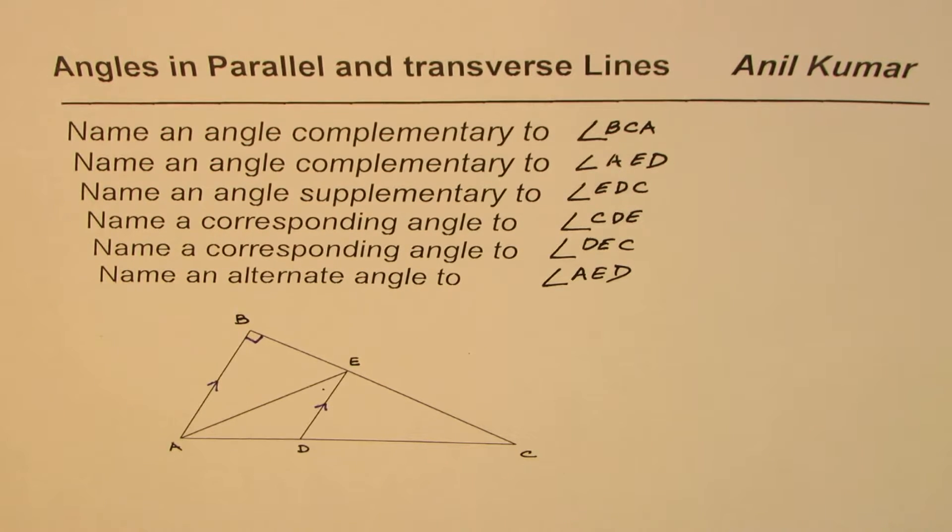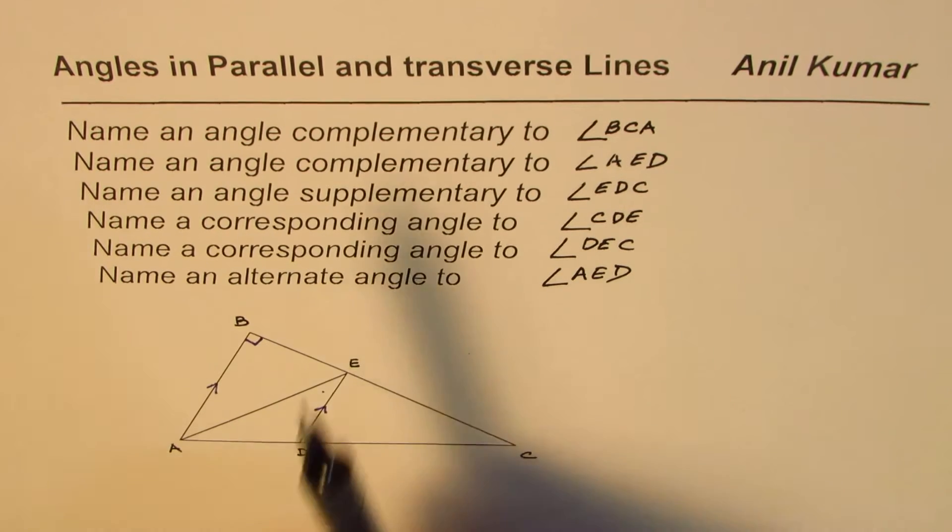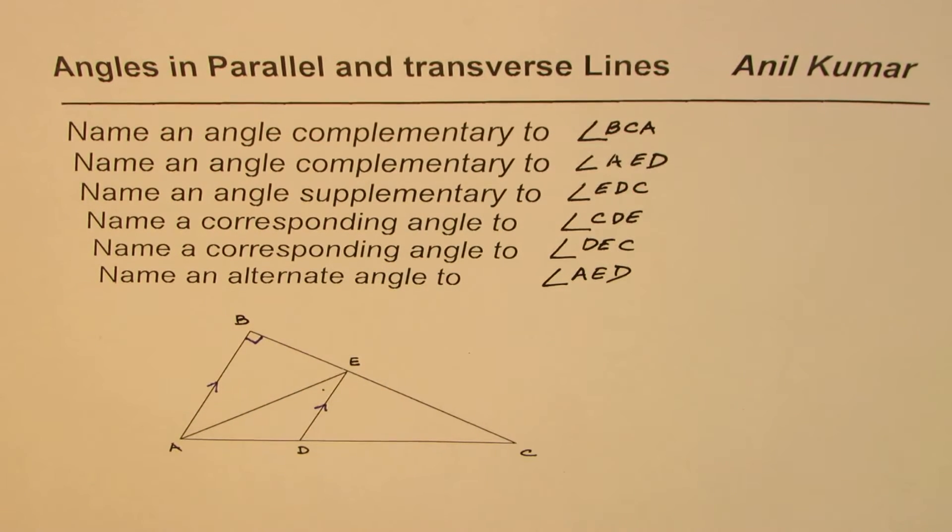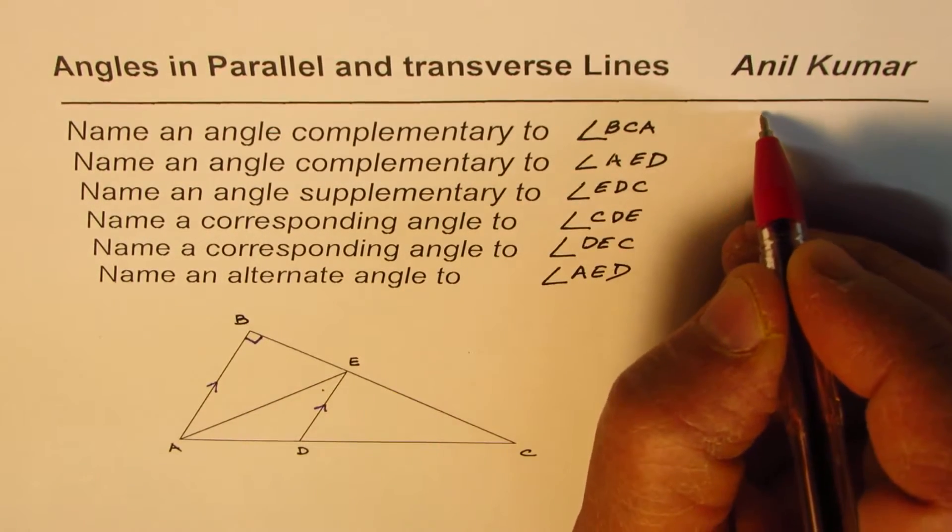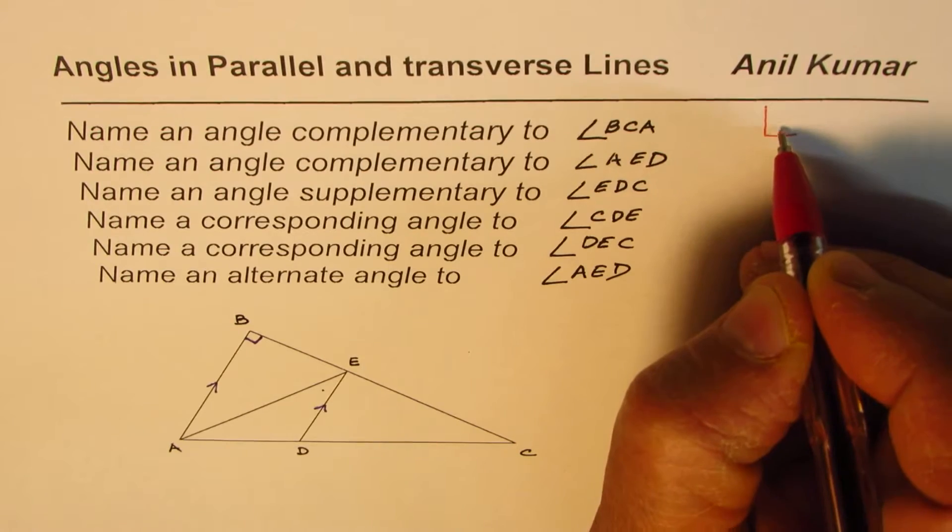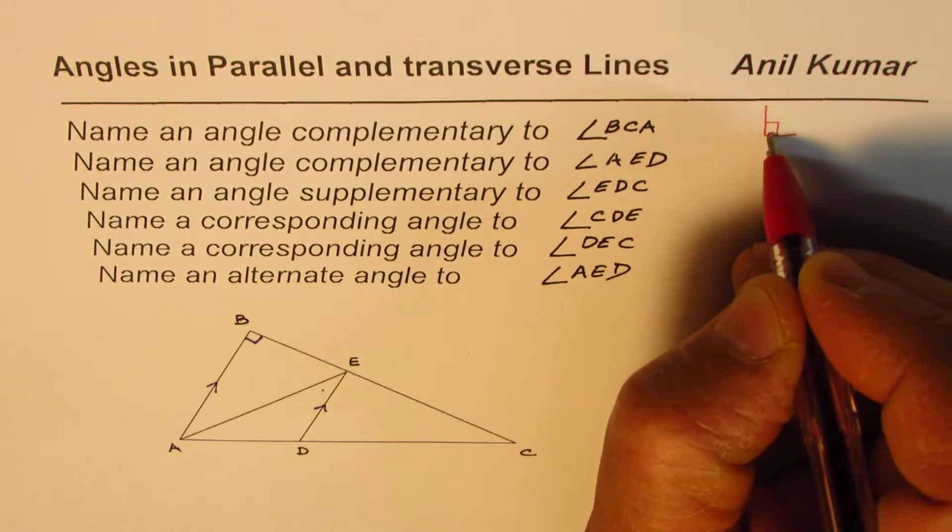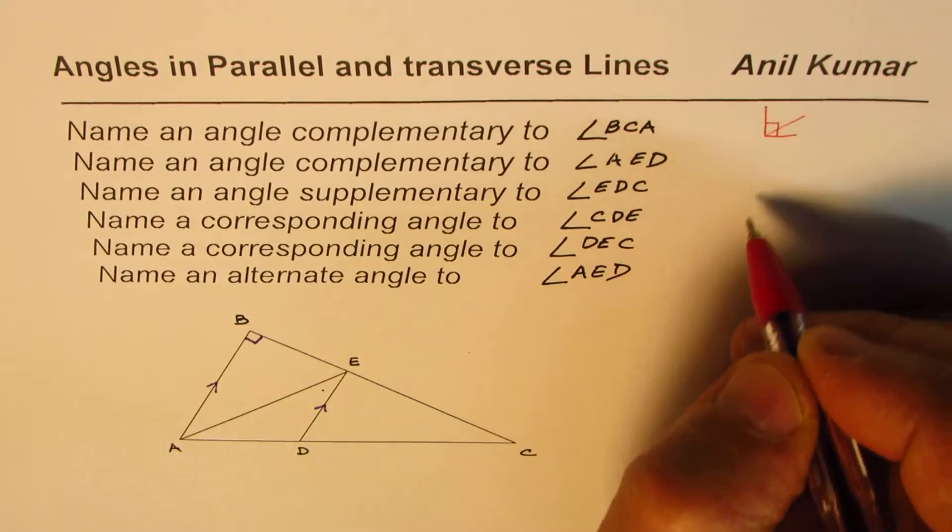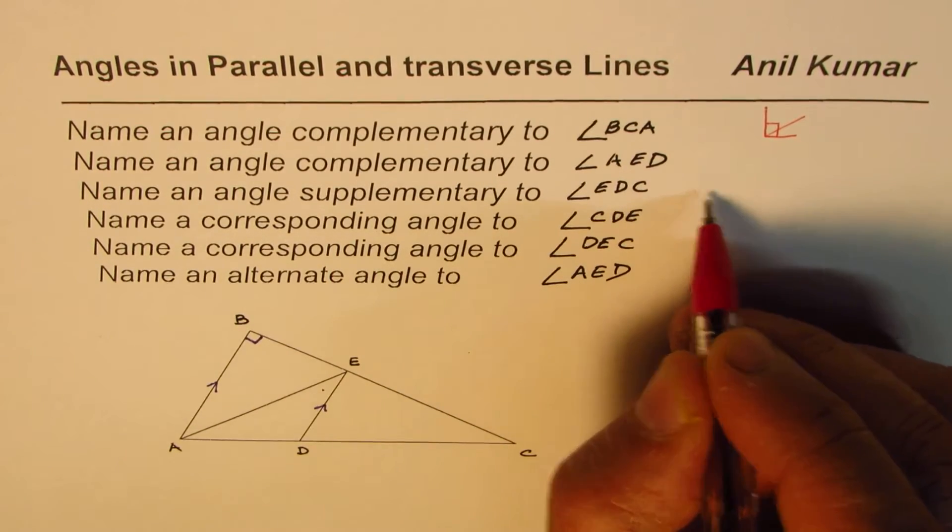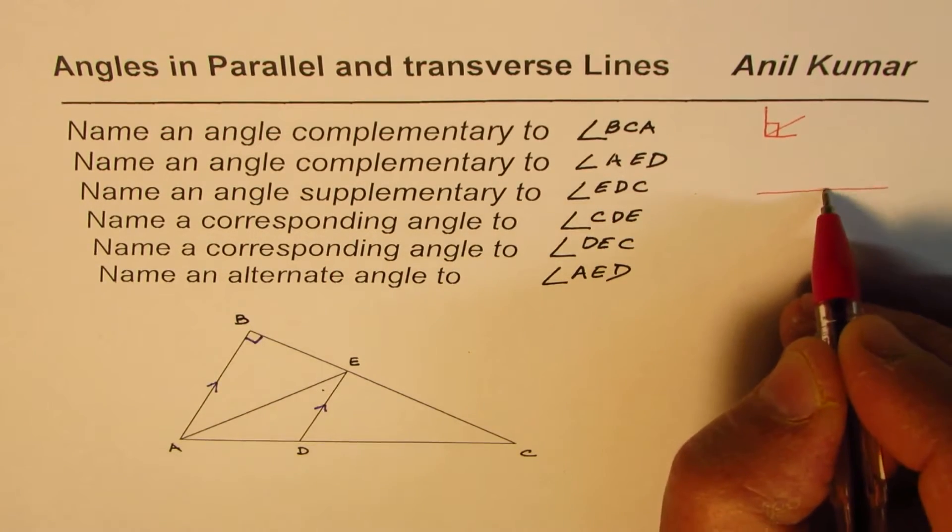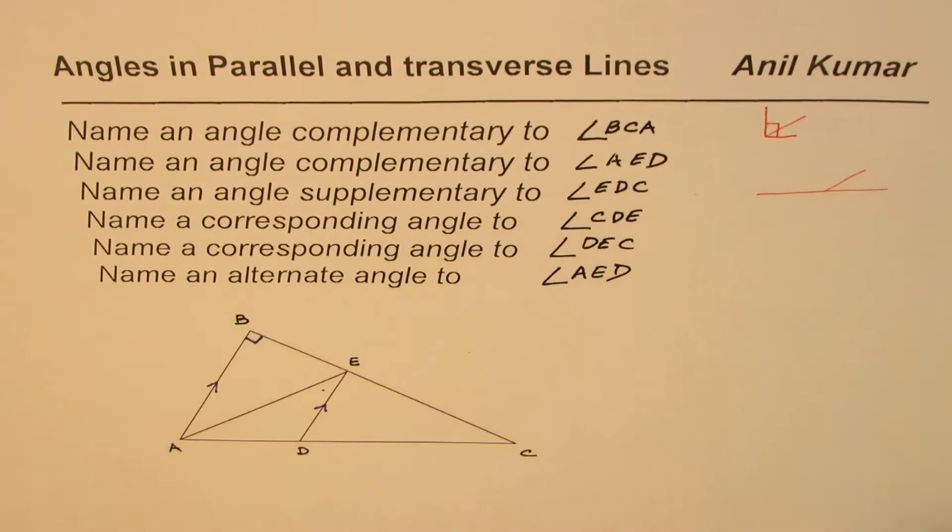Now before we begin, what are complementary angles? So complementary angles are those which form 90 degrees, whose combination could make 90 degrees kind of like this right. How about supplementary angles? Supplementary angles will be those which form kind of a line, so that should help you to find the answer.